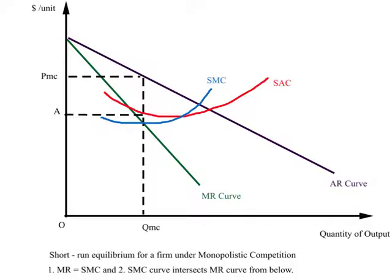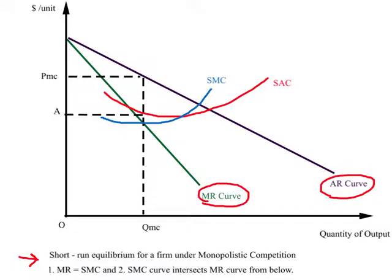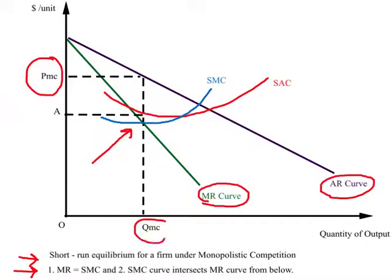This diagram depicts short-run equilibrium for a firm under monopolistic competition, and it looks exactly the same as a diagram for a monopolist. We have a downward sloping AR curve, and since this curve is downward sloping the MR curve must lie below it. For short-run equilibrium, two conditions must be fulfilled: marginal revenue must equal short-run marginal cost, and the SMC curve must intersect MR from below. Based on this point you can determine the price and output for a firm under monopolistic competition.